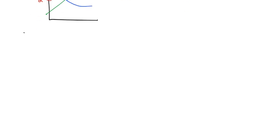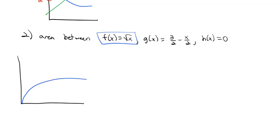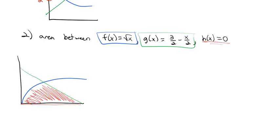A great example is the one we did earlier — finding the area between f of x equals the square root of x, g of x equals 3 halves minus x over 2, and h of x equals 0. We had to use two different integrals when integrating with respect to x because there was a change in which function was on top. But if we integrate with respect to y, we can simplify things considerably.